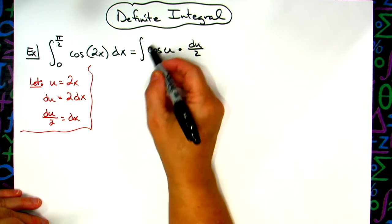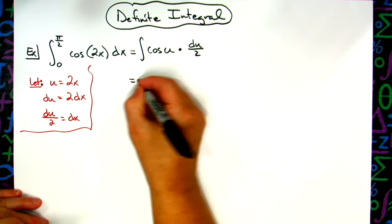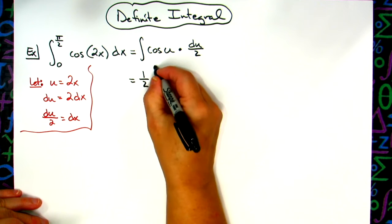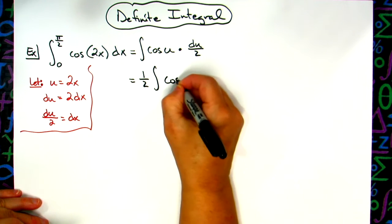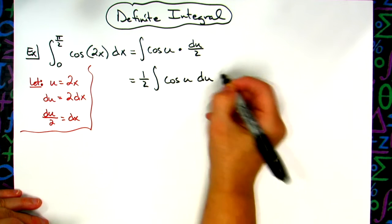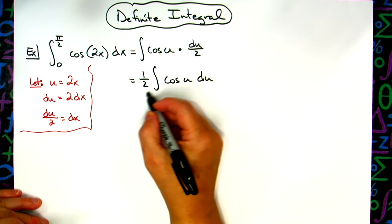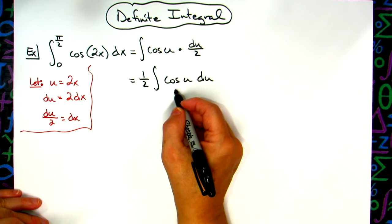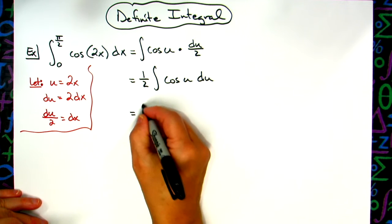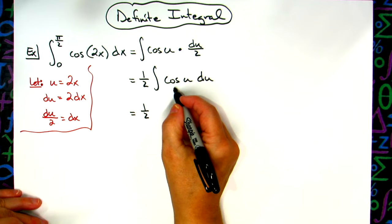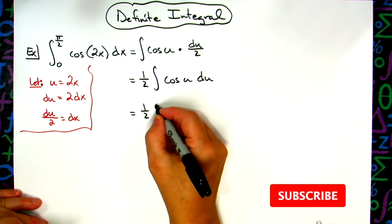Now I'm going to work the problem out with no limits of integration. I'm going to pull that one-half out, so I'll have cosine u du. I'm all in terms of u. I've got the one-half out here. I can integrate like normal. I'll have the one-half. When I integrate cosine, I'm going to have a sine.